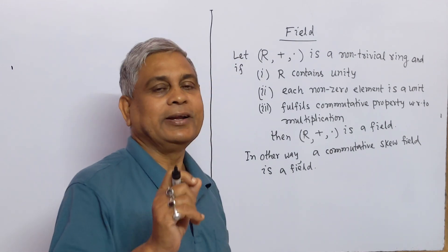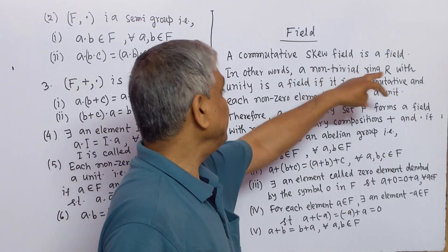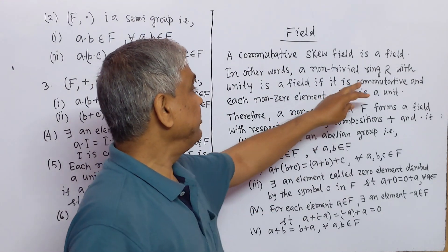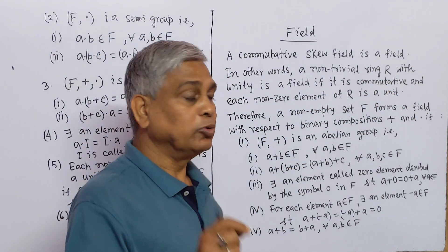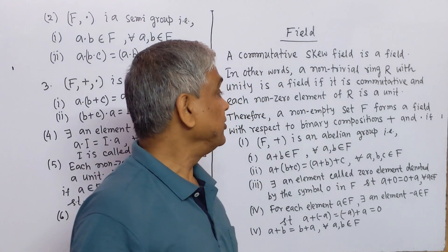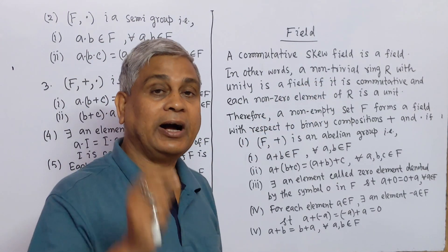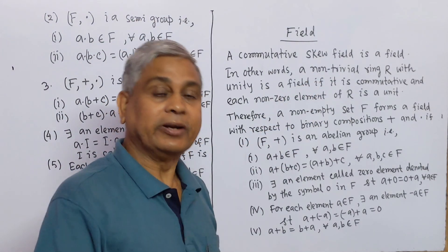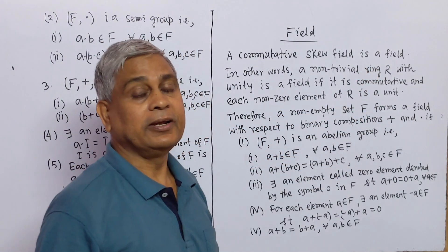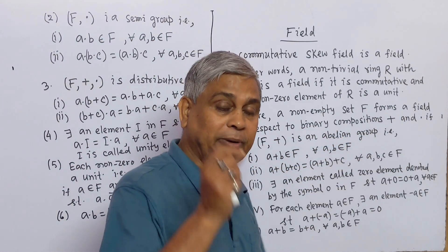Now we write the definition of a field. A commutative skew field is a field. In other words, a non-trivial ring R with unity is a field if it is commutative and each non-zero element of R is a unit. Therefore, a non-trivial set F forms a field with respect to binary compositions addition and multiplication if: